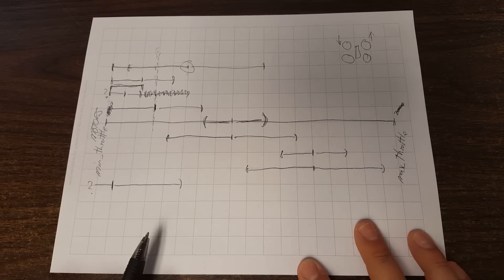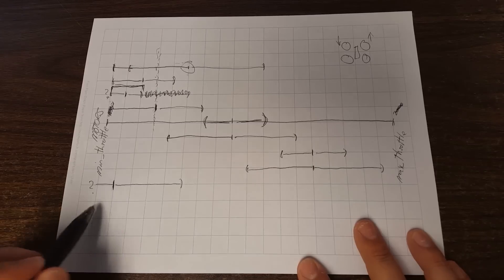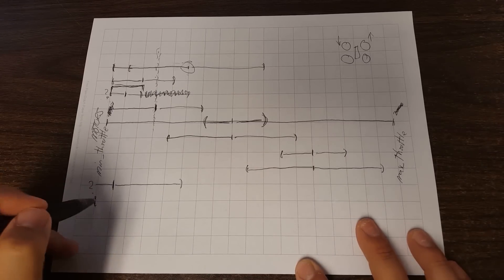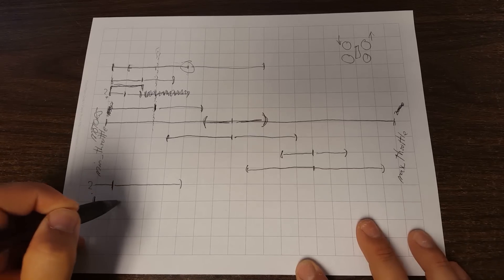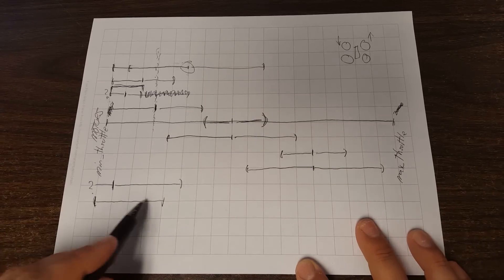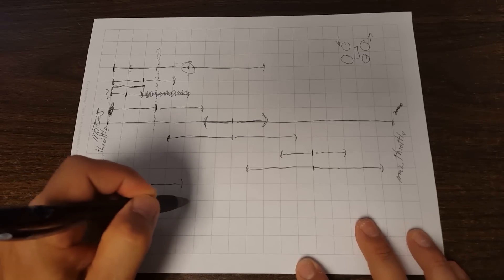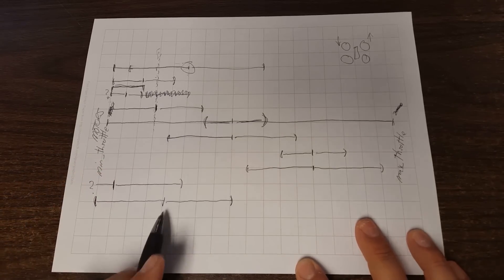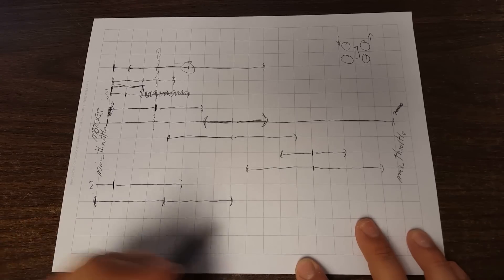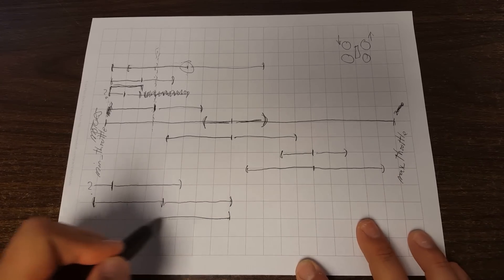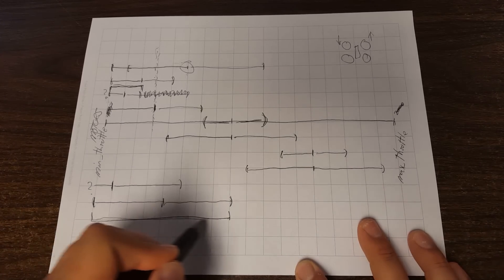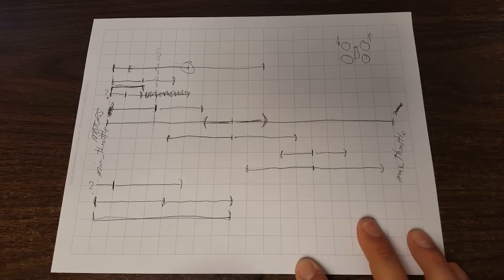What air mode will do is air mode will temporarily bump that set point up, one, two, three, four, one, two, three, four, so that you end up in this situation, and you have the full authority that you are requesting by your stick deflection.